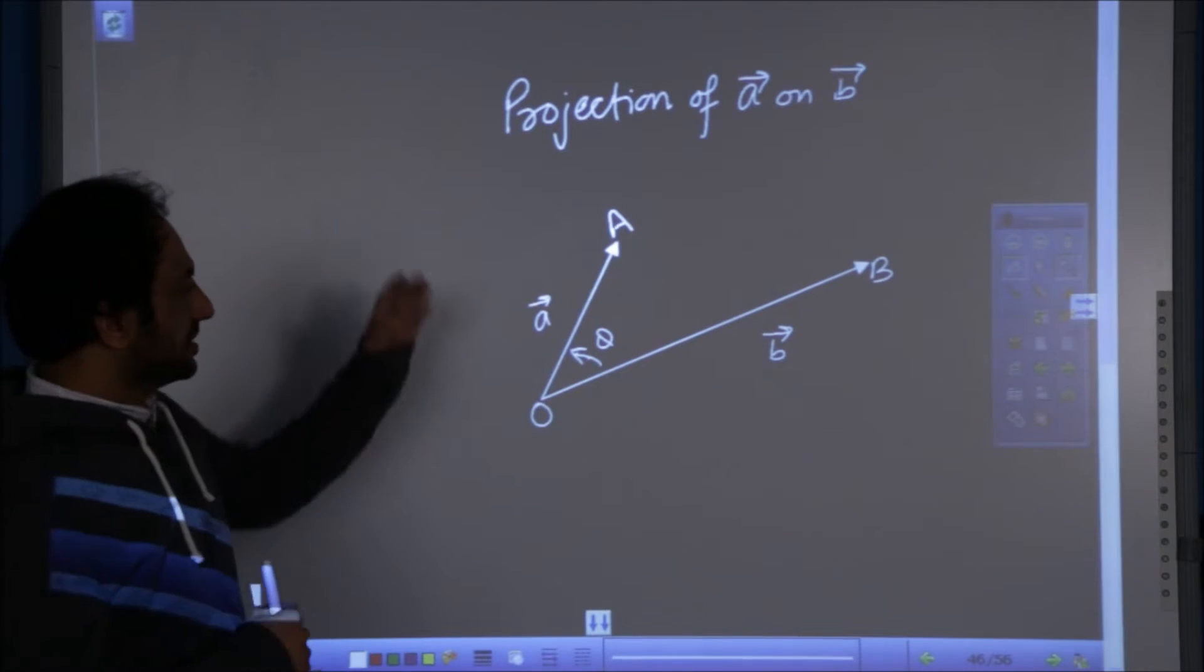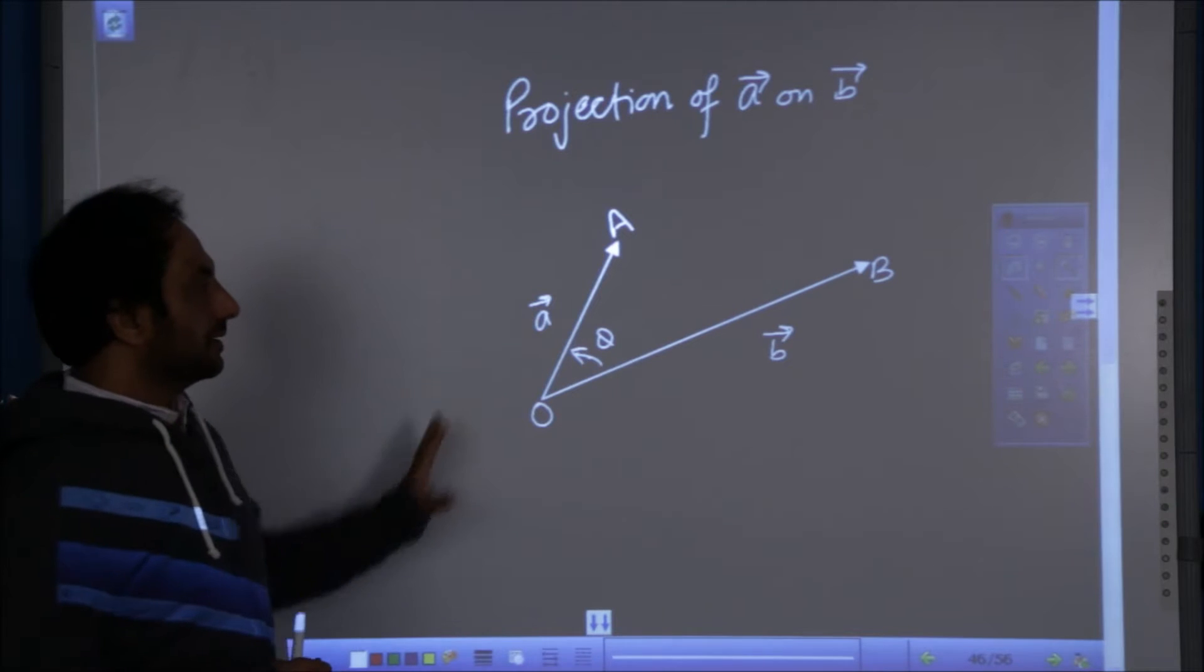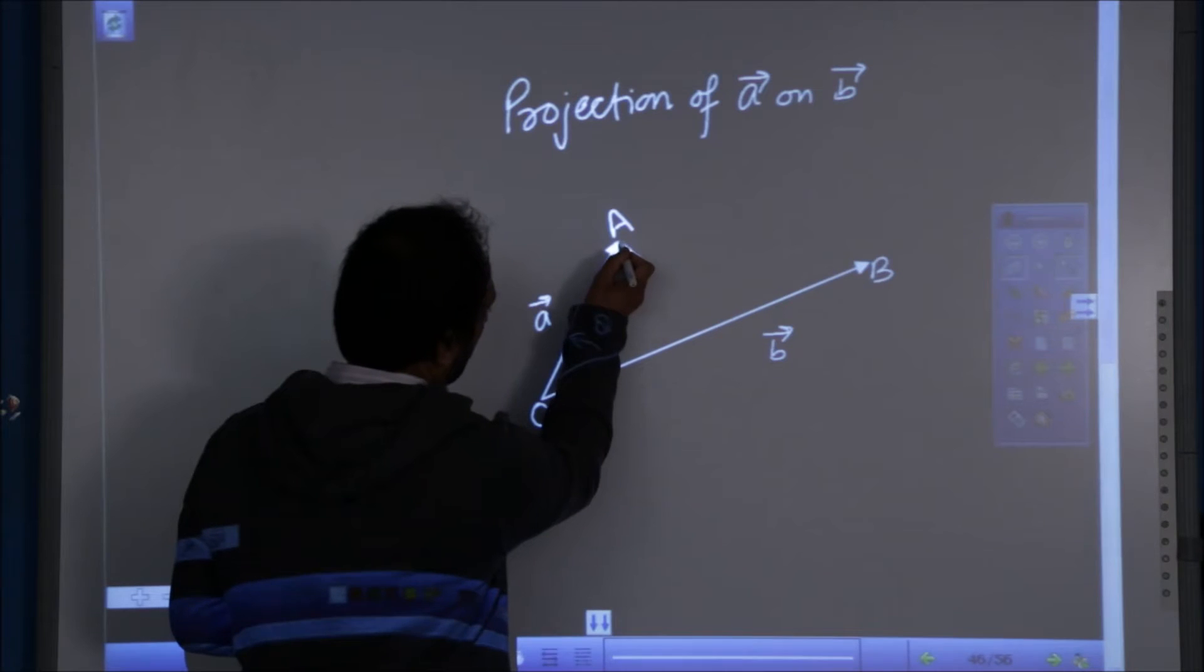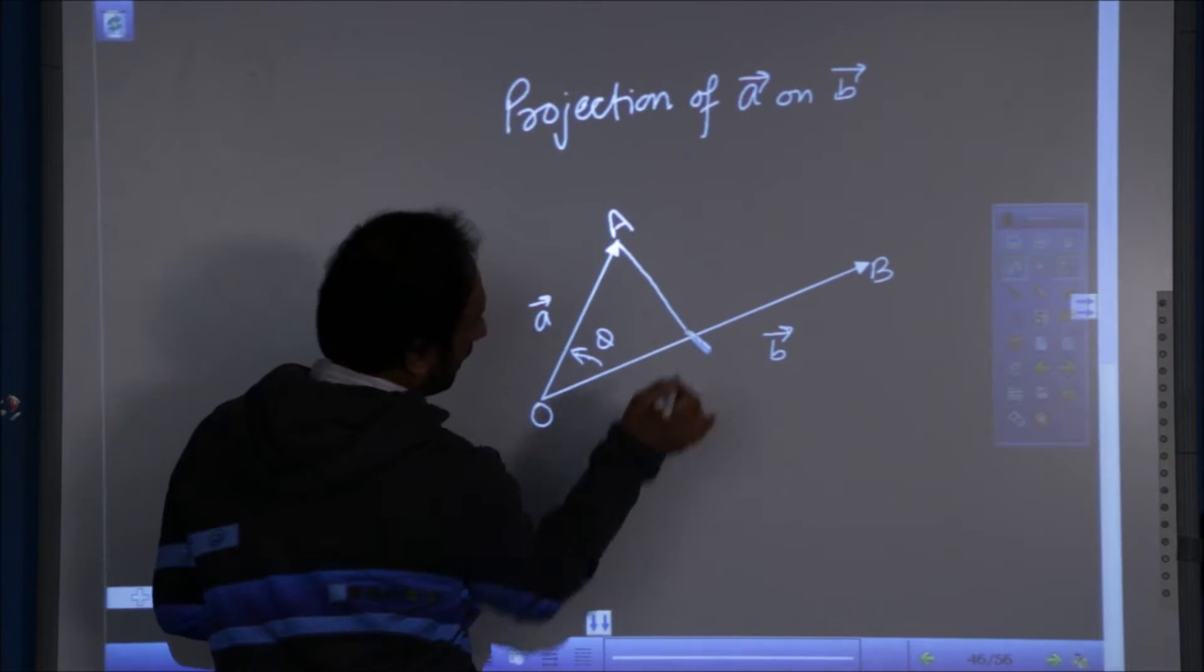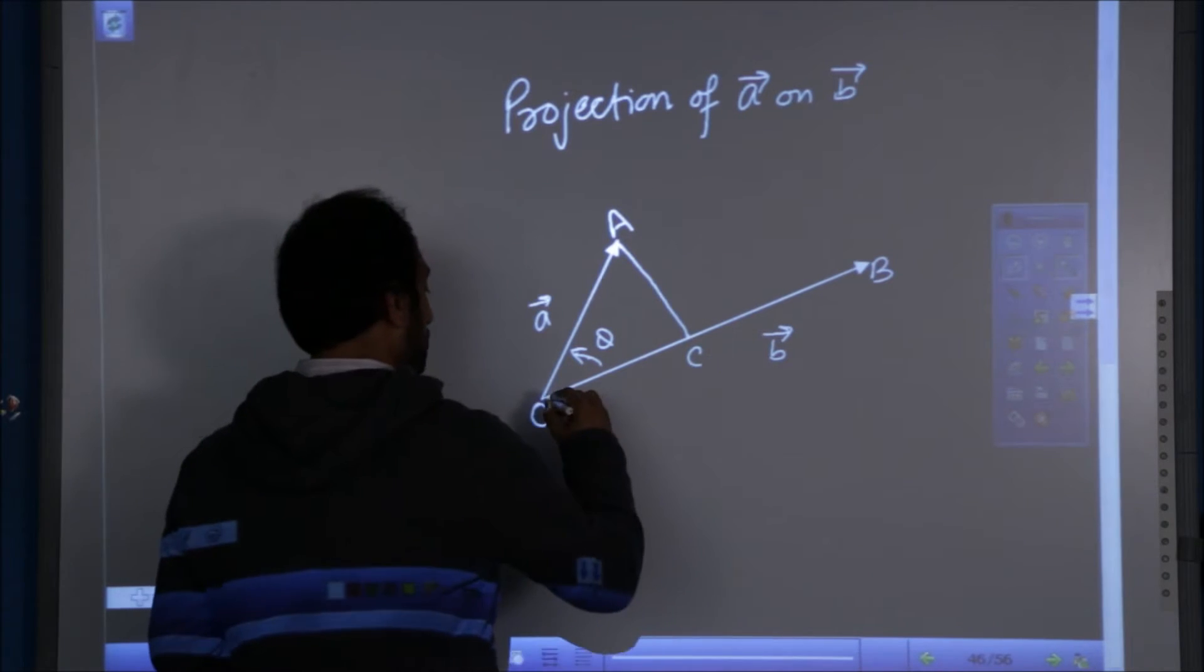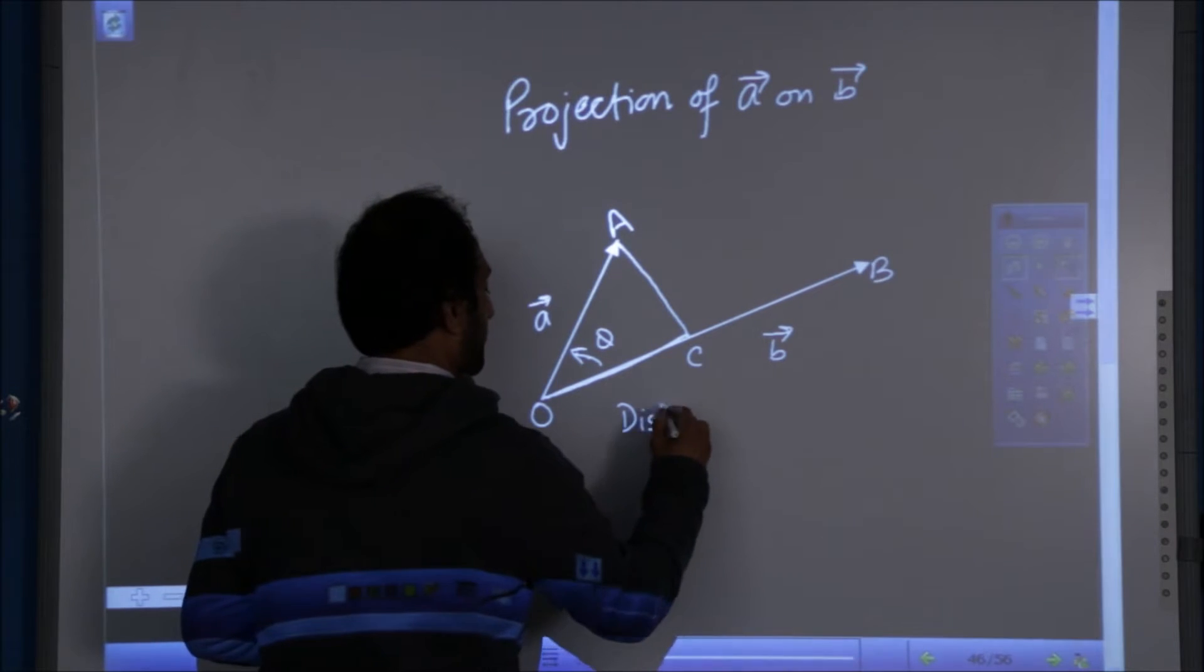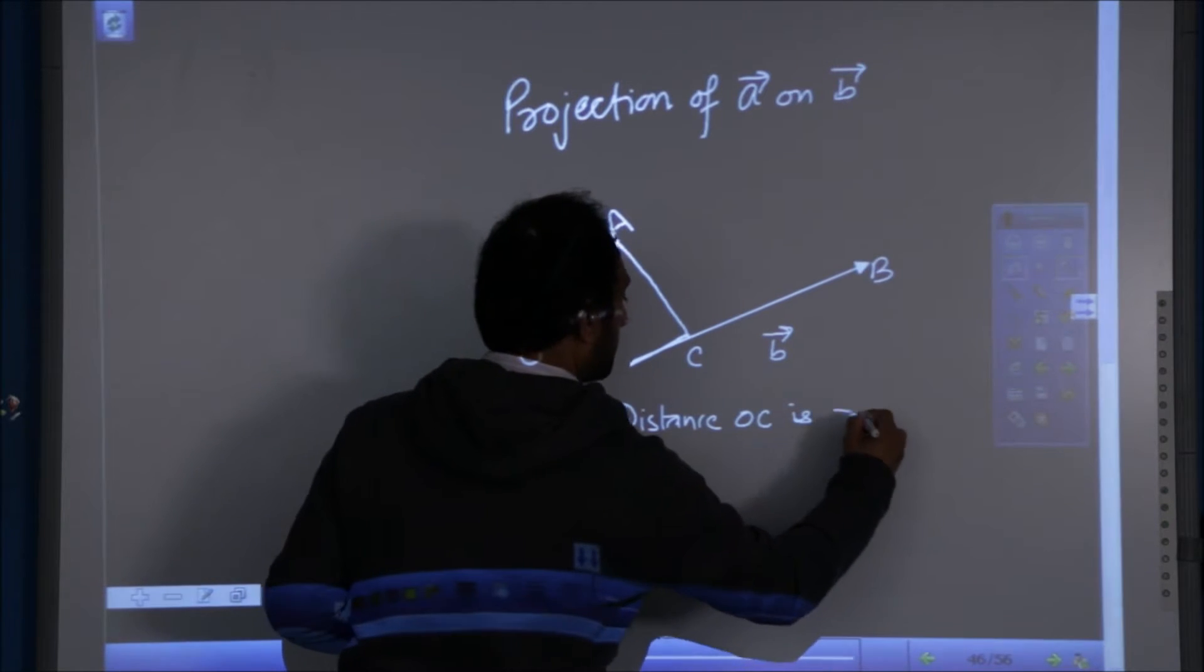Right now we have two vectors A vector and B vector. They are co-initial vectors and I am dropping a perpendicular from A, the point A on vector B, say point C. So OC, the distance OC, is the projection of the vector.